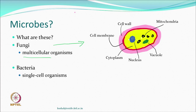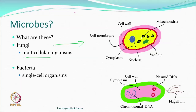Similar to fungi, bacteria are microorganisms, but bacteria are single-cell organisms and simpler in structure. They can divide into two and keep multiplying. Bacteria also have a cell wall and cytoplasm; they contain plasmids which carry a type of DNA, and chromosomal DNA which resides in the cytoplasm. Some bacteria may have a flagellum, but not all of them.